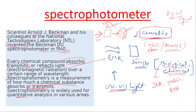Spectrophotometry is widely used for quantitative analysis in various areas. It is also used in biological samples — for example, for DNA, protein, and RNA analysis.